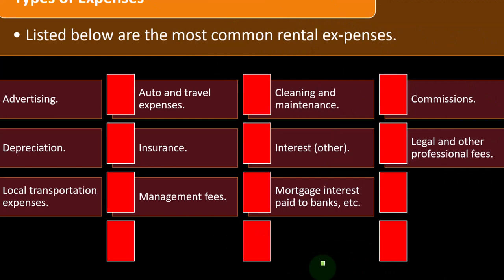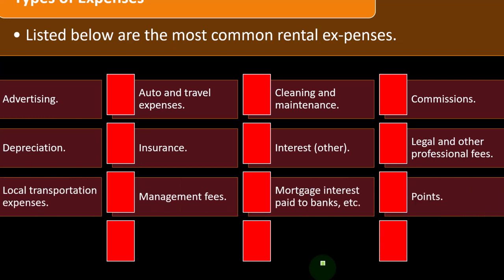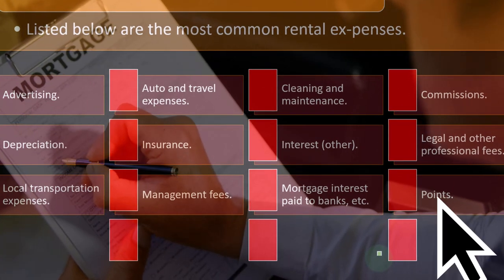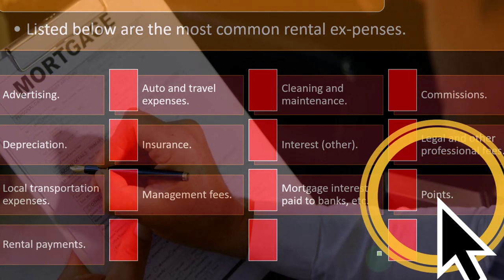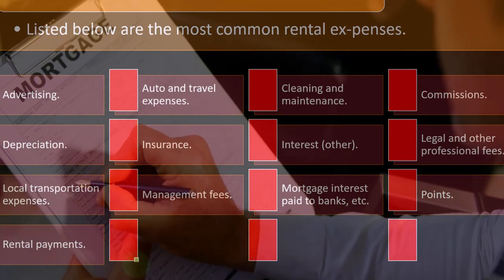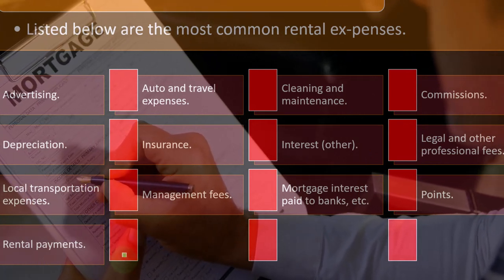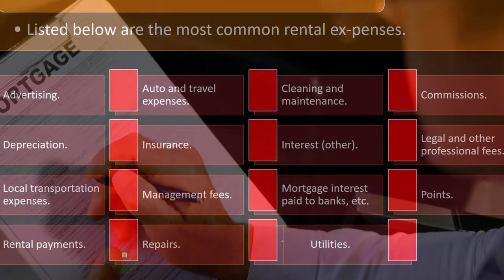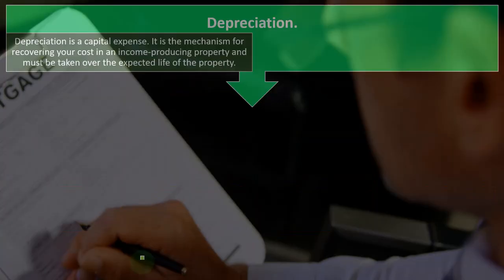Mortgage interest paid to banks covers the interest specifically for the loan taken out for the rental property. Other interest might be for other loans not directly the mortgage itself, but applied to the rental property. Points kind of coincide with the interest—it's a messy situation we'll dive into in more detail shortly. Rental payments, repairs, taxes, and utilities are quite common expenses as well.